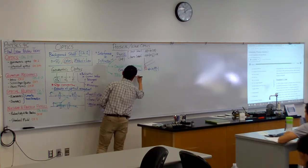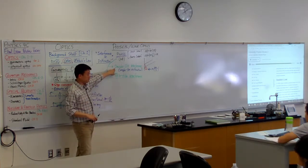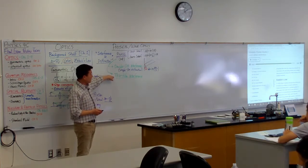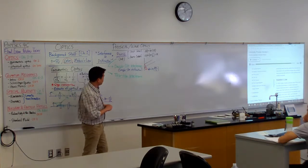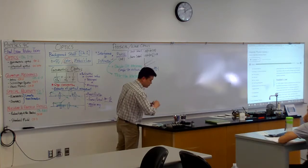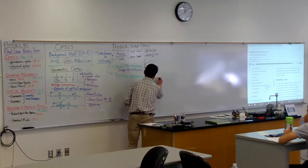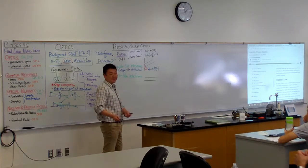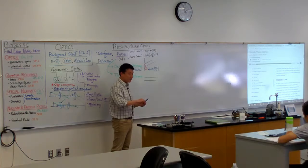Thin film interference is qualitatively different from double-slit interference. The geometric arrangement is different — it involves reflection. In the simplest thin film setup, we deal with two parallel surfaces. Even when they're not parallel, we approximate them as parallel, because all we care about is the distance between them, not the angle. Even when we say light is incident at some angle, we assume it's close enough to normal incidence.